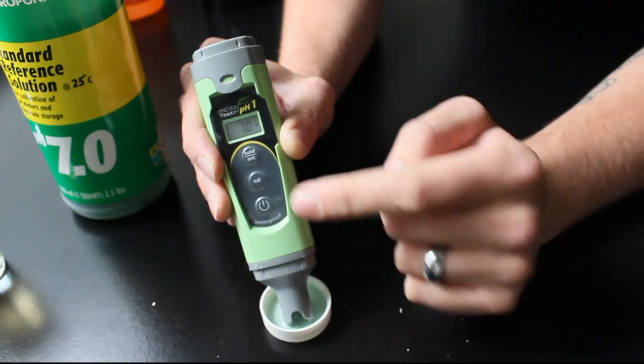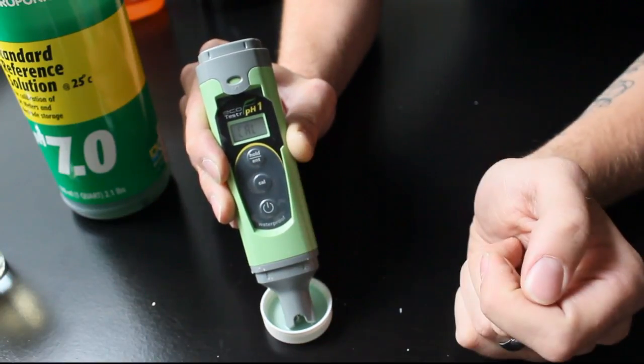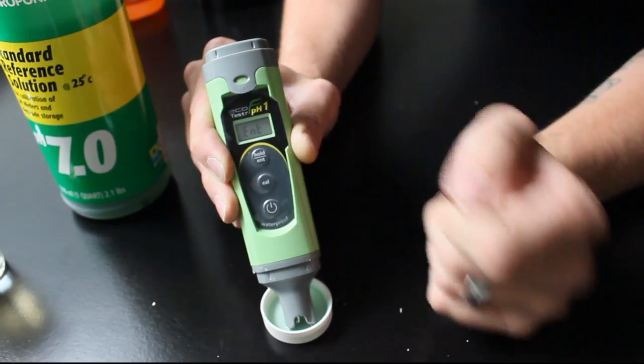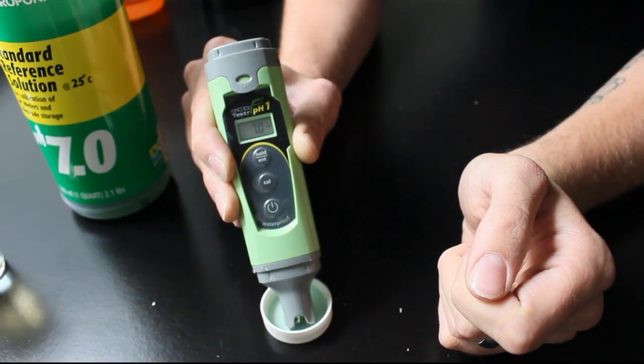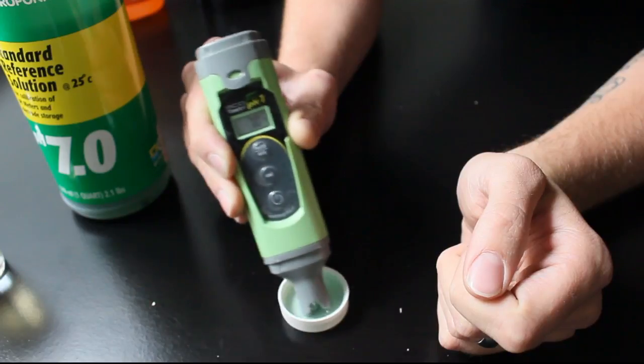If we did need to calibrate it, we would hit our calibrate button, hit enter, and that would bring us straight to our 7.0 calibration where we should be. Now it's calibrated.